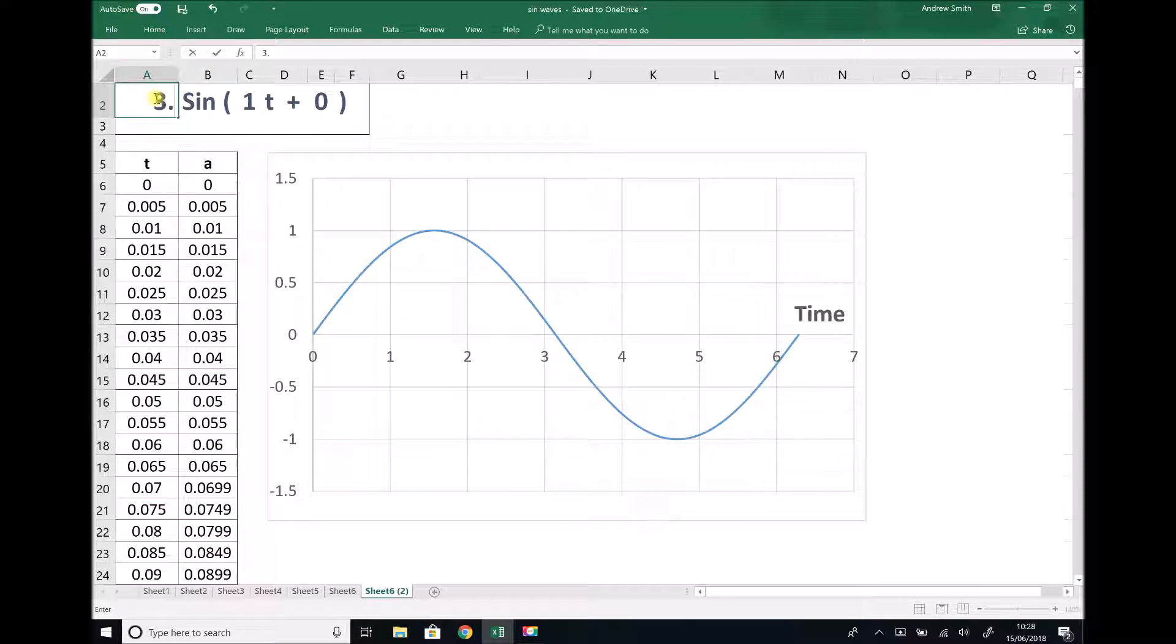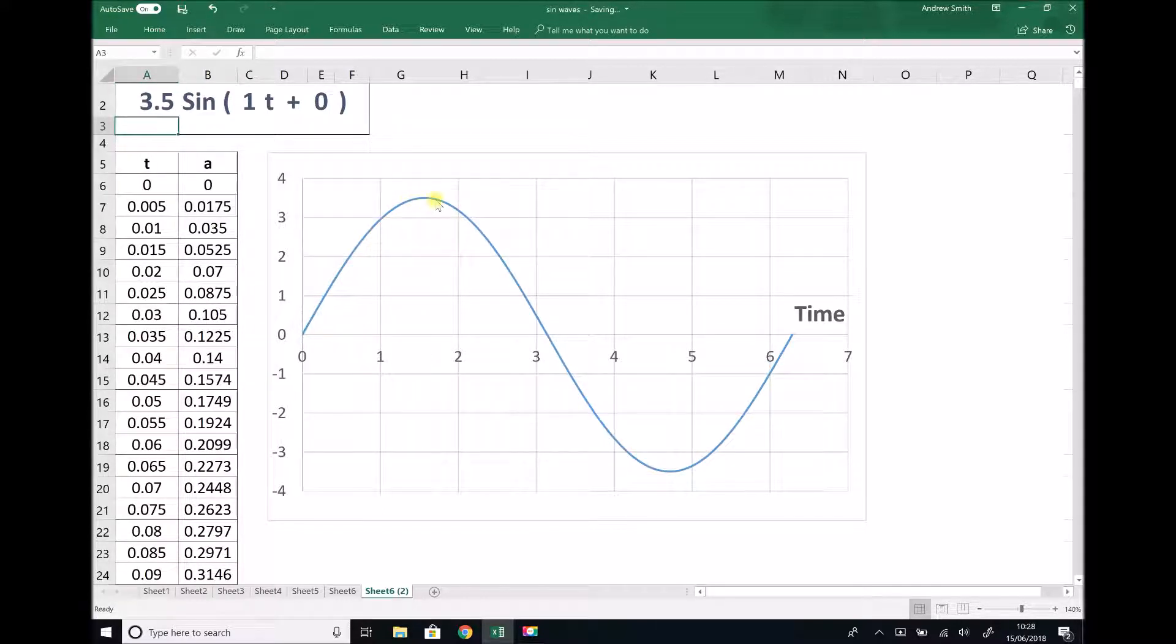But if we change the amplitude here, let's say for example we change it to 3.5, then what we notice on our graph is that the amplitude or the peak value is going to change from one and it's going to change to 3.5. This number in front of the sine 1t we call the amplitude, and it represents the peak maximum value of our graph. If we go into the negative region we'll see that the amplitude or the magnitude of that amplitude is the same at minus 3.5.